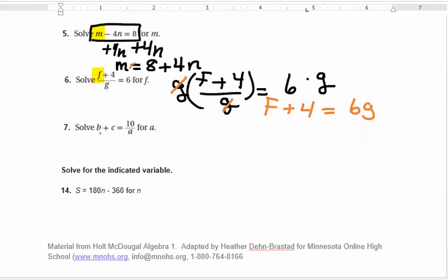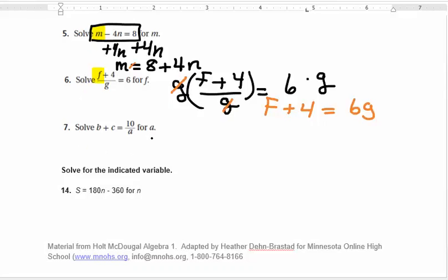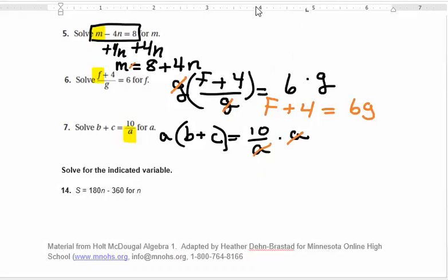Number 7 says solve B plus C equals 10 divided by A, or 10 over A, for A. So it's kind of similar to number 6 in that the variable that we're looking for, A, is part of a fraction. This time it's the denominator of the fraction. So our first step is going to be to get rid of that fraction or that division by doing the opposite. So dividing by A, the opposite of that is multiplying both sides by A. When you multiply the left side by A, you have to multiply everything on the left by A. So we need a parenthesis there. On the right side, times A divided by A, that cancels. So we're left with A parenthesis B plus C is equal to 10.